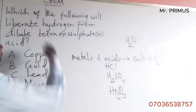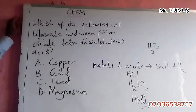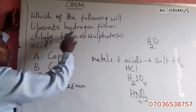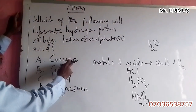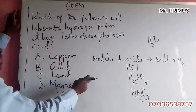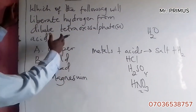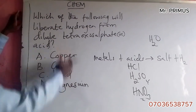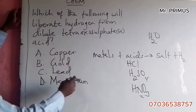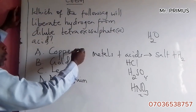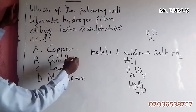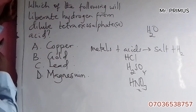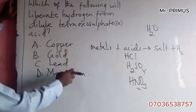Now let's look at this question: which of the following will liberate hydrogen from dilute acid — copper, gold, lead, or magnesium? Of all these, which one is more electropositive? Copper and gold are less electropositive, so these ones cannot displace hydrogen because hydrogen is higher than copper and gold in the electrochemical series.